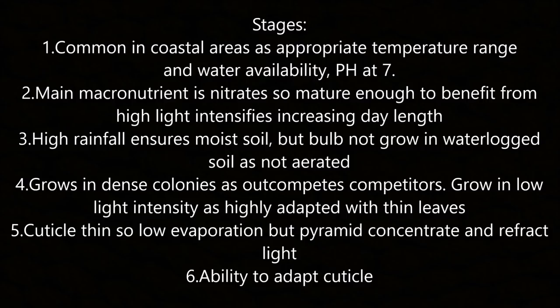Wild garlic case study: it grows in common coastal areas with appropriate temperature and water availability; pH is 7. The main macronutrient is nitrate. It benefits from high light intensity as day length increases. High rainfall ensures moist soil, but the bulb will not grow in waterlogged soil as it requires aeration. It grows in dense colonies, outcompeting other plants as it can grow in low light intensity; it has thin leaves, a thin cuticle for low evaporation, and the ability to concentrate and refract light.